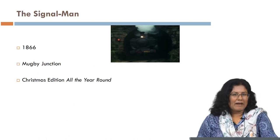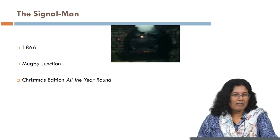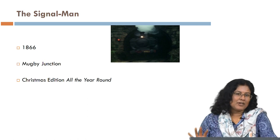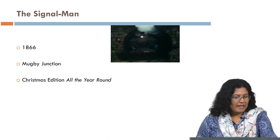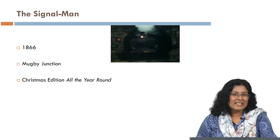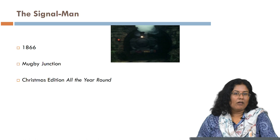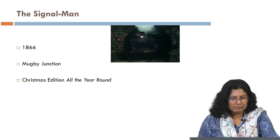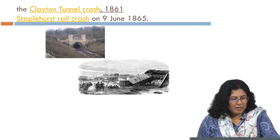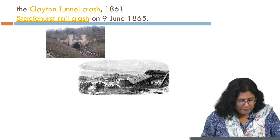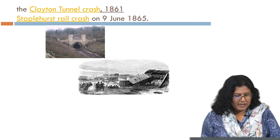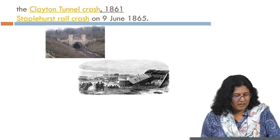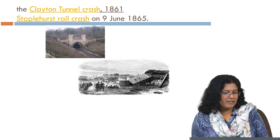A little bit of background information: the story was published in 1866 and is part of his collection called the Mugby Junction. It was published in the Christmas edition of his magazine, which he edited, called All the Year Round. I'm going to show you two illustrations — the first is a picture of the Clayton Tunnel Crash.